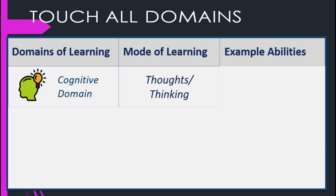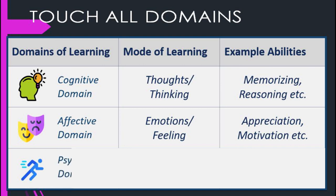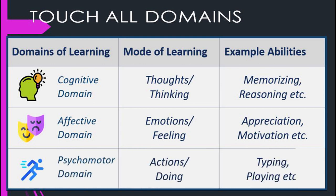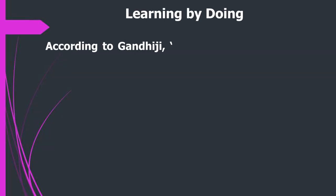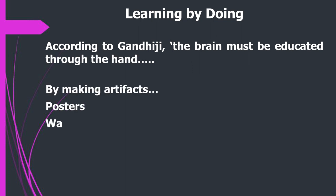These domains are the cognitive domain, the affective domain, and the conative or psychomotor domain. However, these can only be realized when proper, well-planned activities have been included in the day's lesson plan. According to Gandhiji, our brain must be educated through hands — thus the child can learn best when hands are in action.